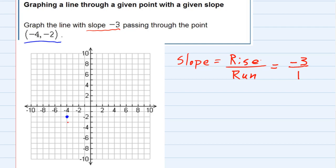That means I need to go down 3 points. And then I need to run 1, which means I go to the right 1. So starting from our point, we went down 3—1, 2, 3—and we went over 1. That gives me another point on my line.